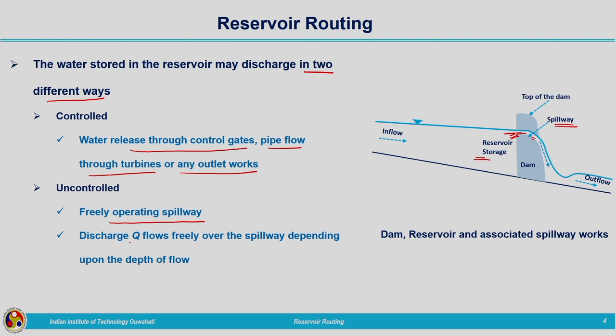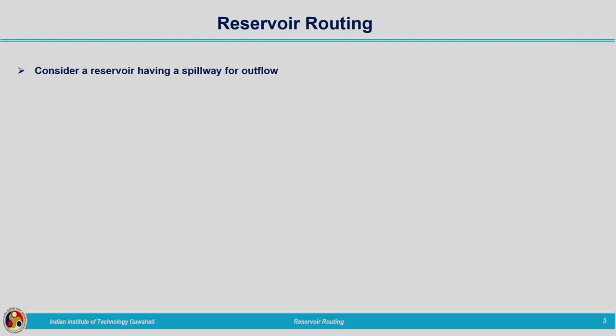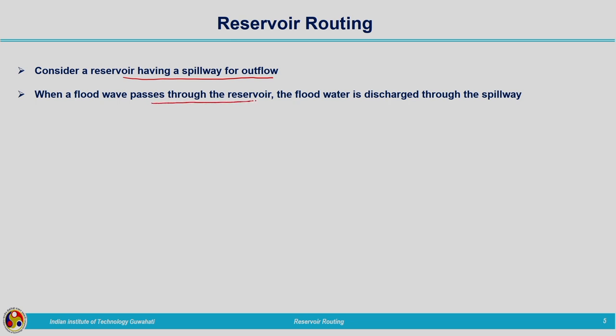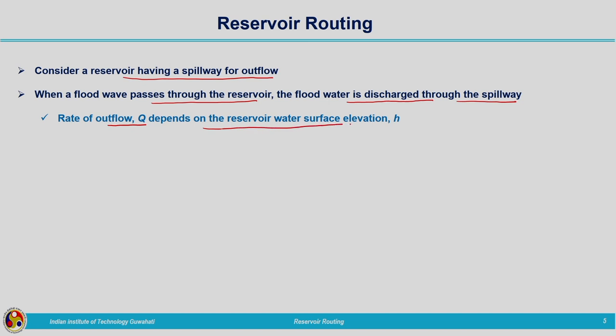In uncontrolled release, discharge Q flows freely over the spillway depending upon the depth of flow. The outflow from the reservoir depends on the water present in the reservoir — specifically on the head causing the flow, which depends on the water depth or water level in the reservoir. Consider a reservoir with a spillway, either freely flowing or controlled. When a flood wave passes, flood water is discharged through the spillway.